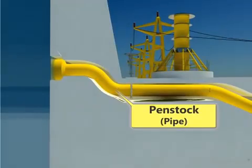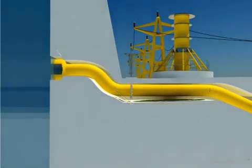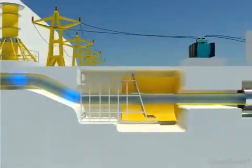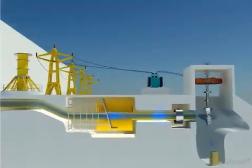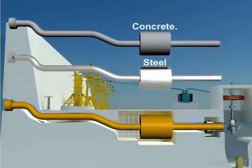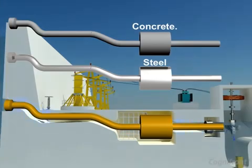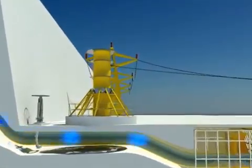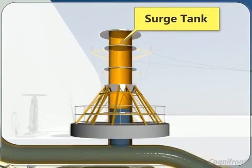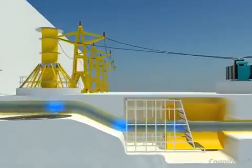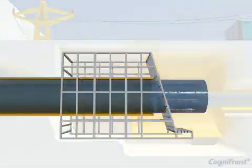Water stored in dams has potential energy. The water under pressure is carried by a penstock and supplied to the turbine through the inlet valve. Penstock is a pipe made up of steel or concrete. A surge tank reduces the excessive water force on the penstock.